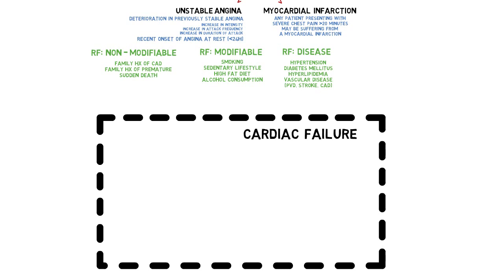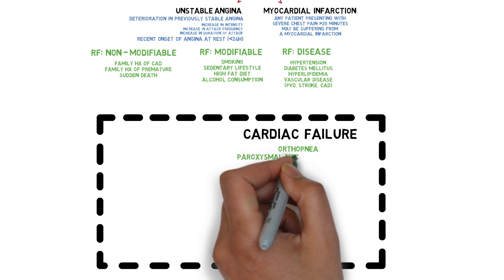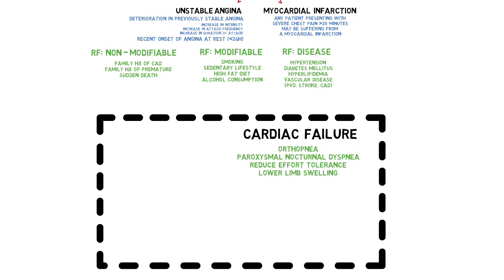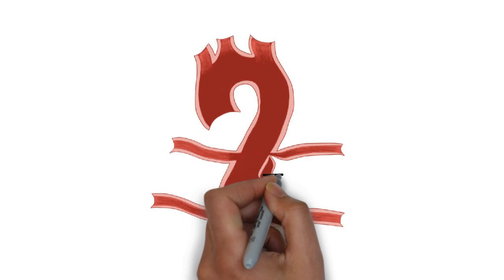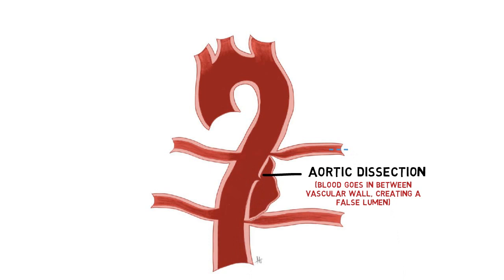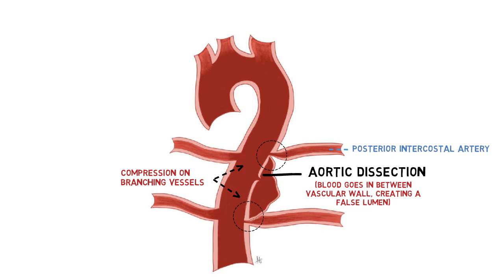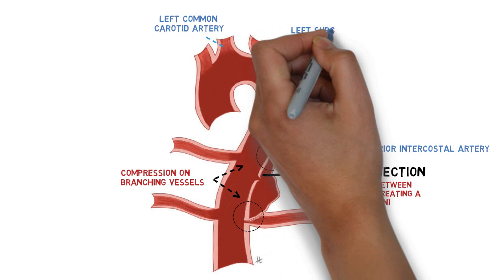By the time a patient has acute coronary artery disease, he or she may already have developed symptoms of cardiac failure, or it may be a direct consequence of the recent event — in that case, acute cardiac failure. Examples of symptoms suggestive of cardiac failure are orthopnea, paroxysmal nocturnal dyspnea, reduced effort tolerance, and lower limb swelling. Symptoms associated with aortic dissection include syncope and limb weakness, depending on where the blood in the false lumen impinges the branching vessels. If it impinges the posterior intercostal vessels, it may cause limb weakness because these vessels supply the spinal cord. If it impinges higher up, between the left common carotid and left subclavian, the patient may have syncope because less blood goes to the brain.